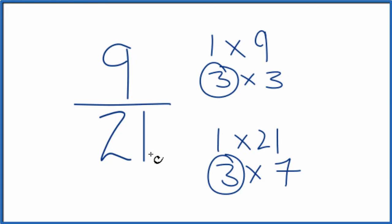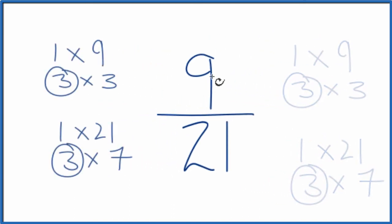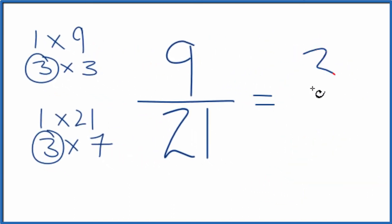So I'll divide 9 by 3 and 21 by 3, and we'll simplify 9 over 21. Let's move these over here. So 9 divided by 3 gives us 3, and then 21 divided by 3 gives us 7.